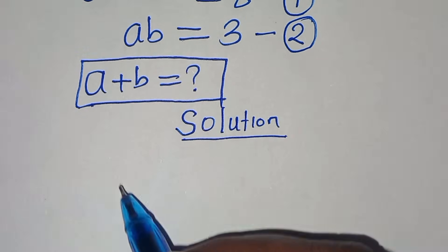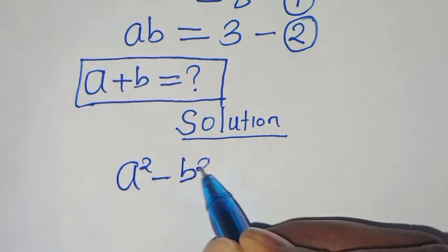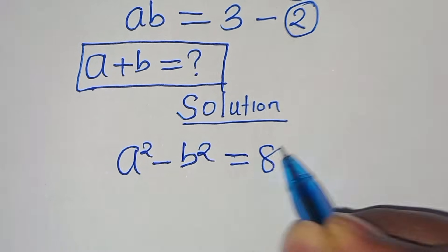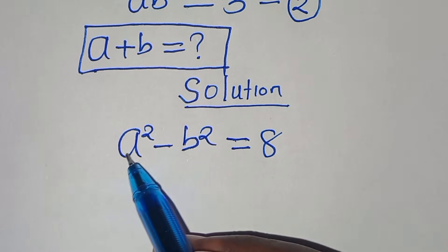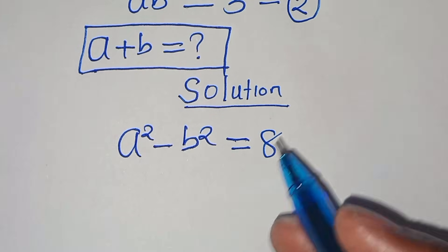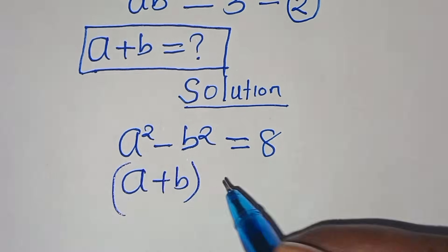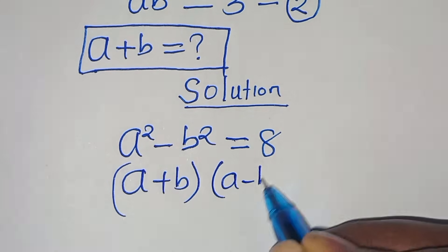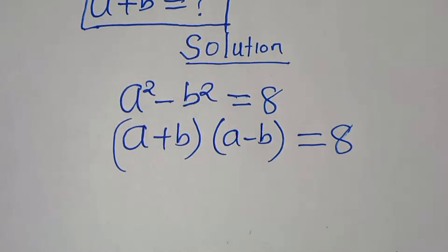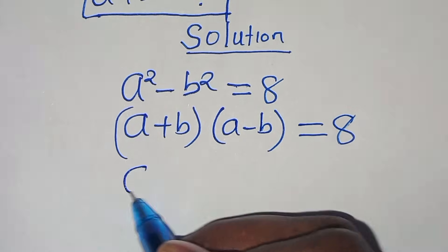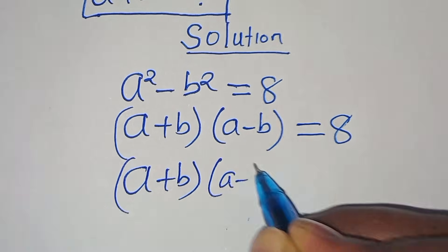From equation 1, a squared minus b squared equals 8. This is a difference of two squares, which we can express as (a plus b) multiplied by (a minus b) equals 8. The next step is to square both sides.